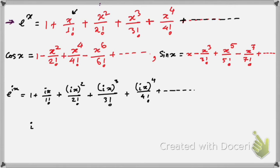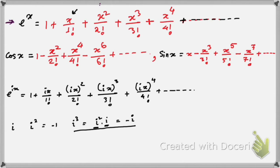Now, when you have i to an even power: i squared equals minus 1. When you have i alone, it remains i. When you have i cubed, that is i squared times i, which equals minus i, because i squared is minus 1. And i to the power 4 is i squared whole squared, which is minus 1 squared, equal to plus 1.